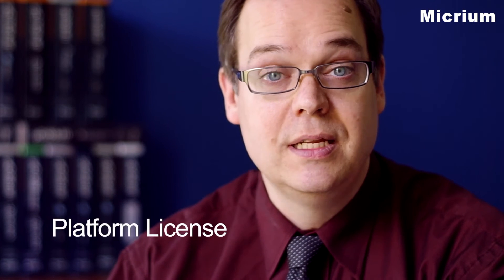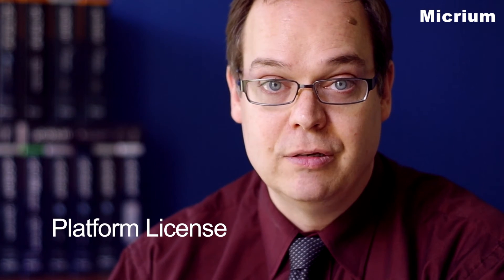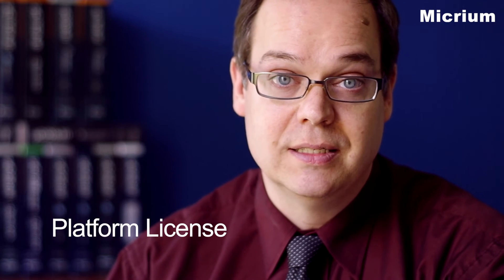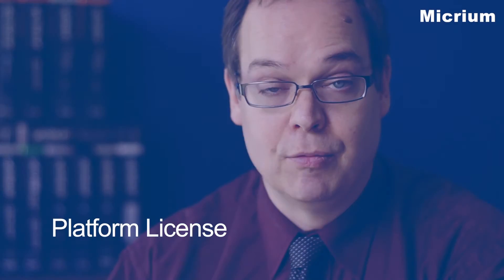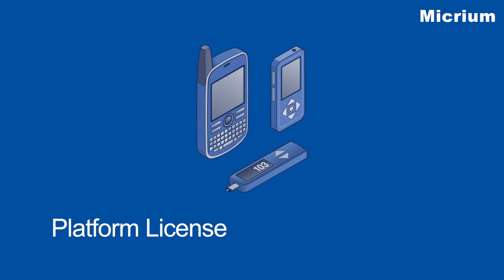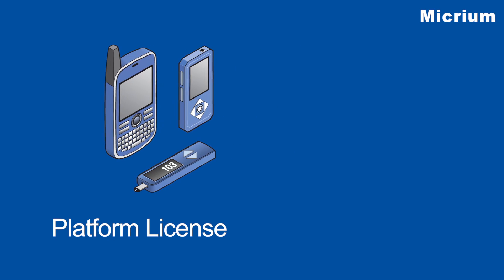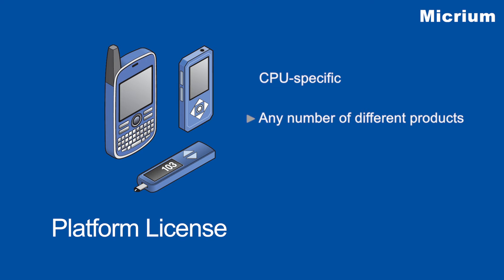The platform license, or CPU type license, allows you to embed Micrium software into a variety of devices that all use the same microprocessor. With this license, you can embed Micrium software into any number of different products and sell as many units as you want, all for one price. The only restriction is that all products must use the same microprocessor.